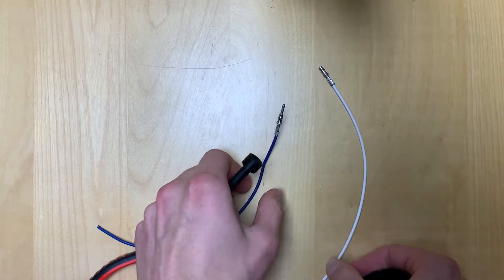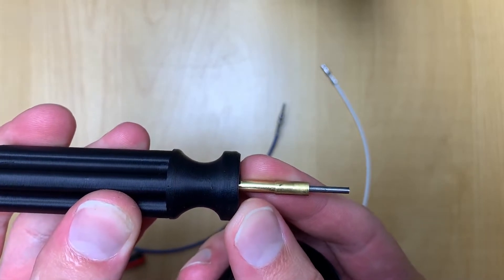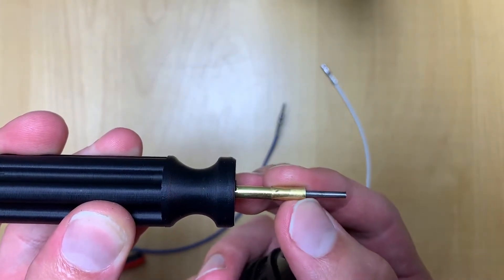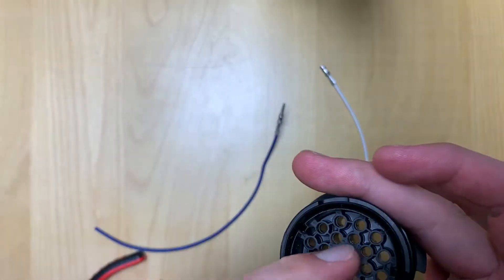This tool goes in there, depresses the wings on the end of the connector, and then it has this push rod to push the wire out of the back of the connector.